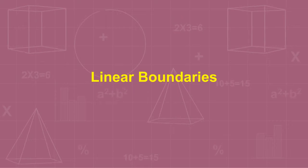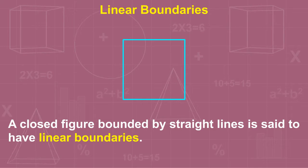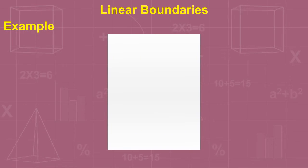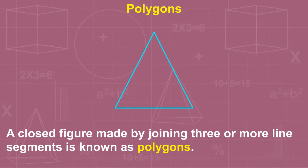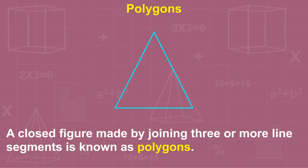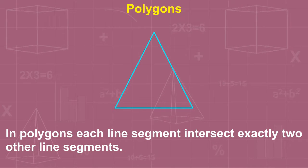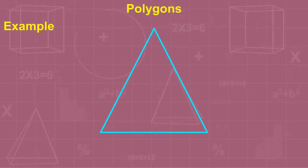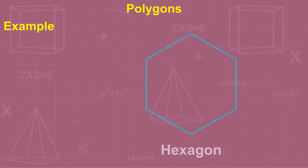A closed figure bounded by straight lines is said to have linear boundaries — for example, a sheet of paper. A closed figure made by joining three or more line segments is known as a polygon. In polygons, each line segment intersects exactly two other line segments. For example, triangle, quadrilateral, pentagon, and hexagon.